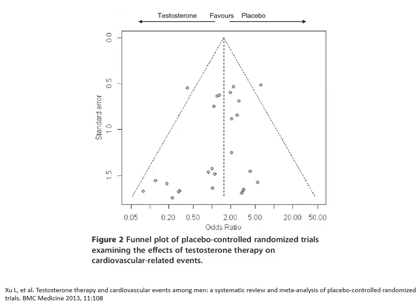This slide illustrates potential publication bias for a systematic review looking at testosterone therapy and cardiovascular events among men who take it. By plotting out the studies and their results, we can see a potential absence of studies in one area, which may indicate an absence of studies demonstrating a harmful event.